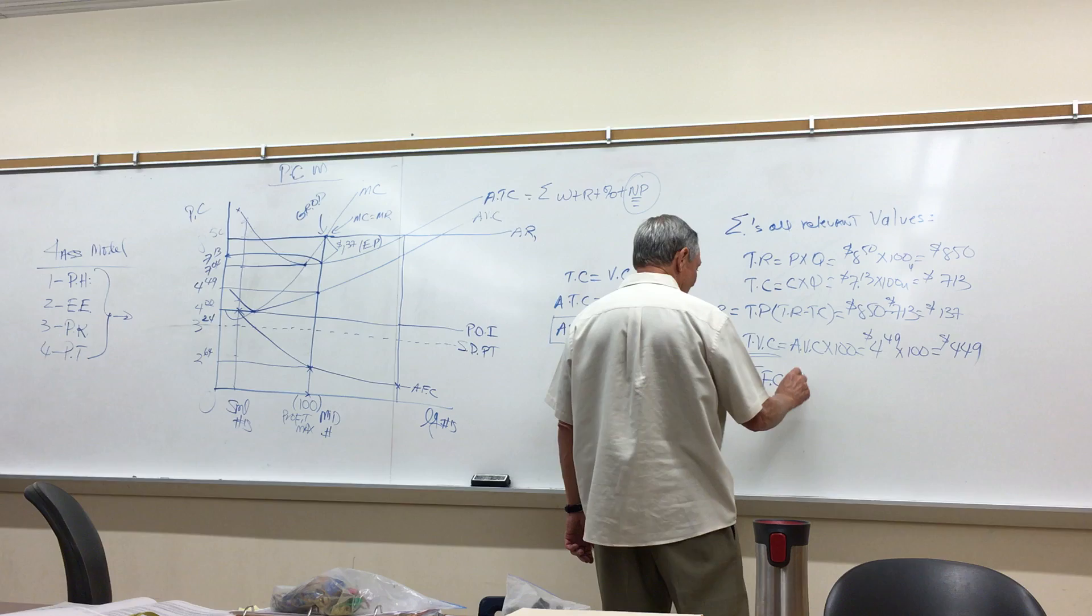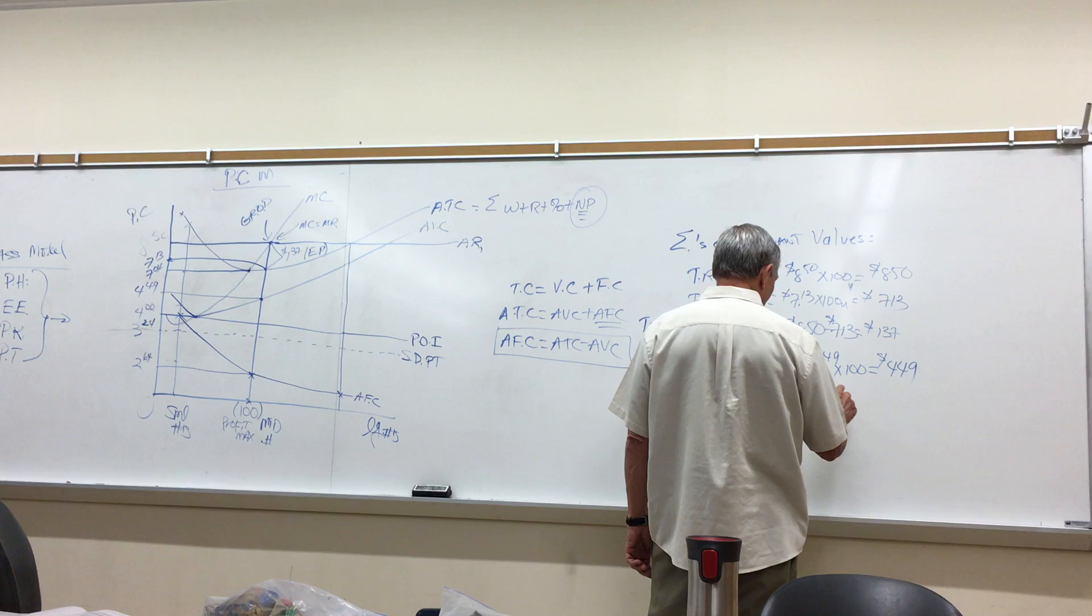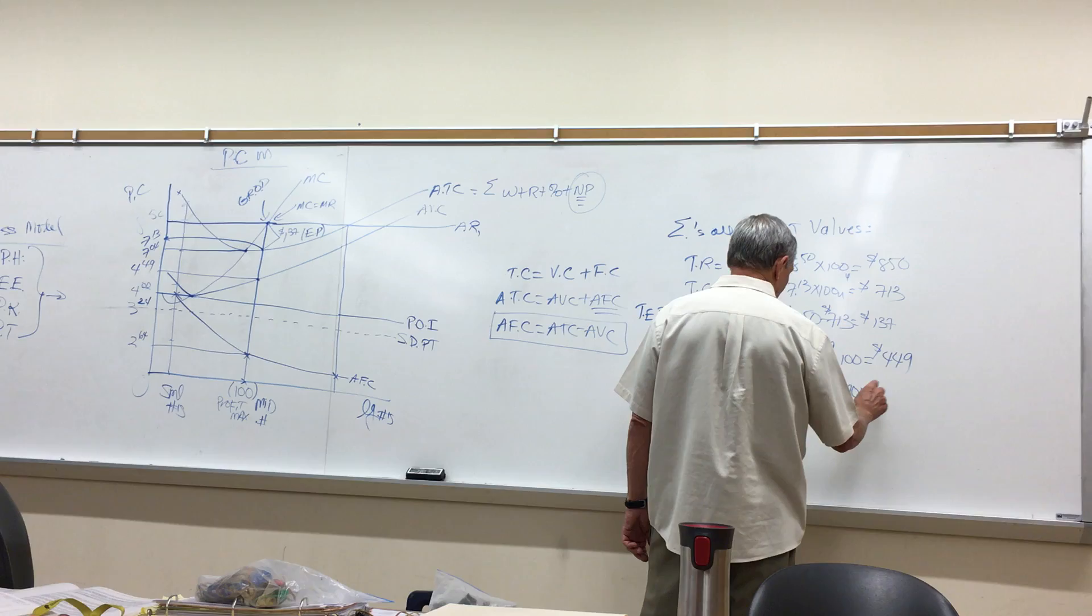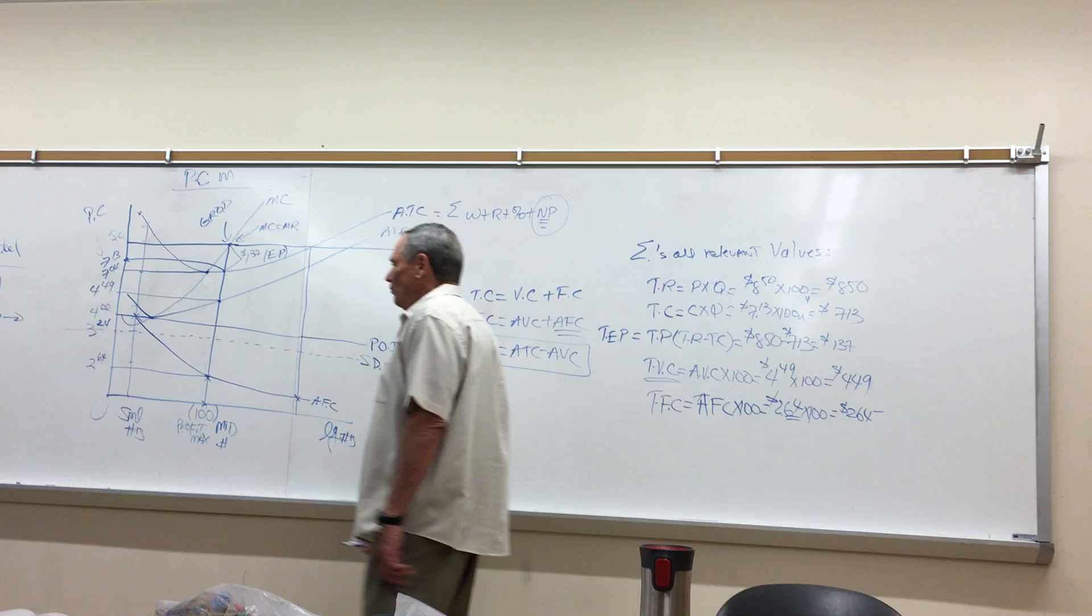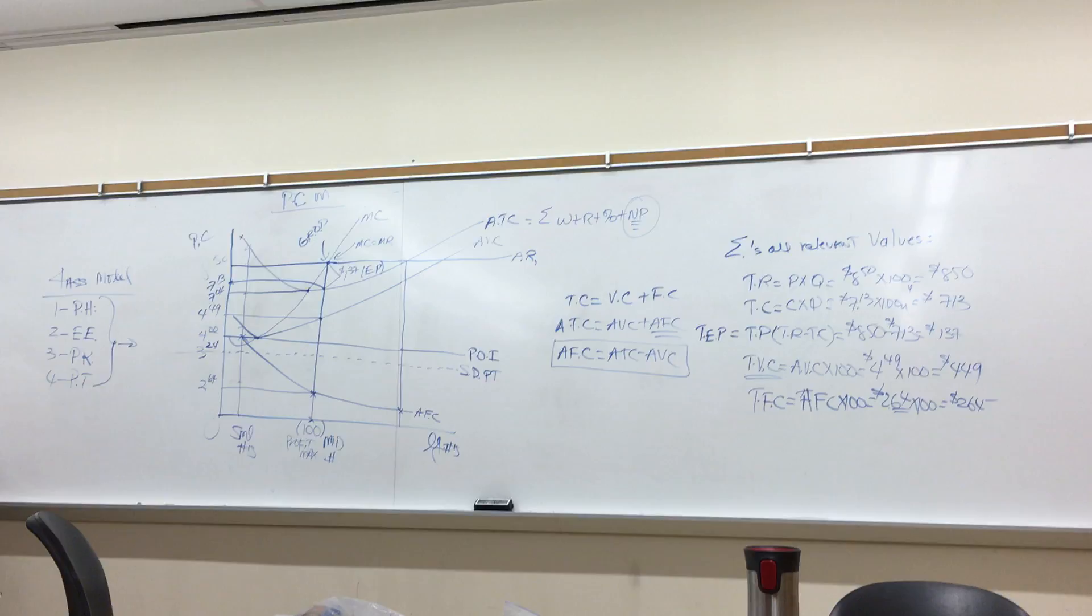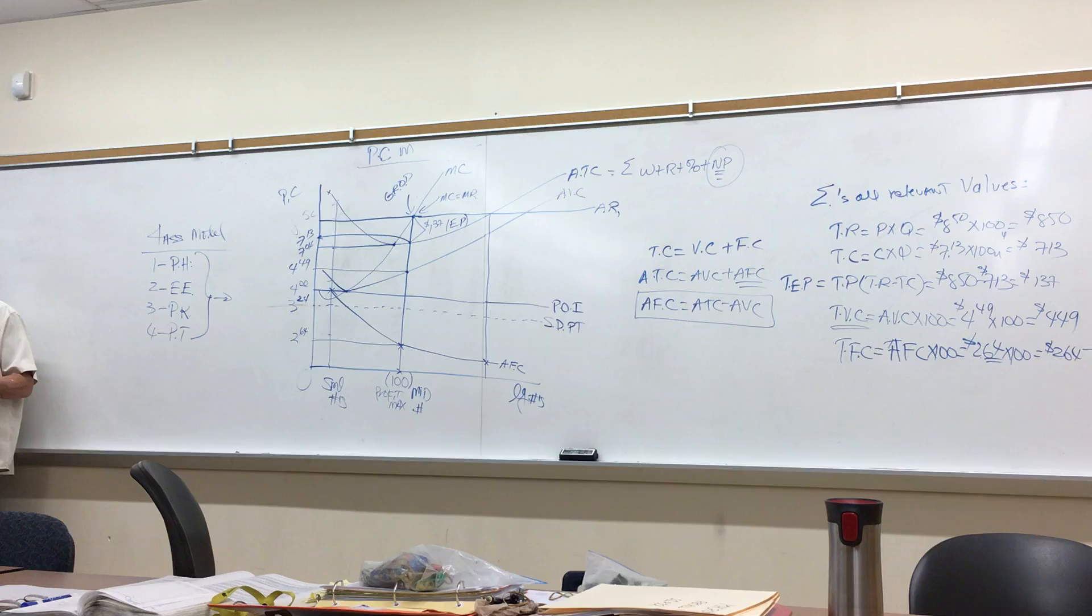What about total fixed cost? That's average fixed cost times my 100 units, which is equal to $264. $2.64 times 100 units equals $264. Therefore, we have calculated all the totals. We see we read directly average variable cost, average total cost, average revenue. We have shown the shutdown point, the point of indifference. What we didn't show is the breakeven point.